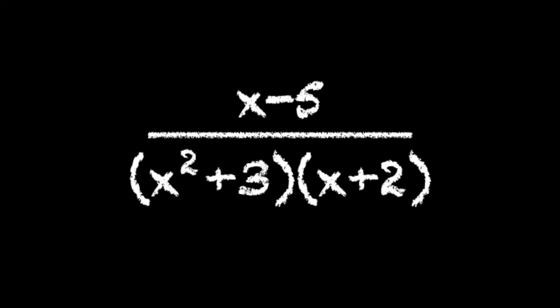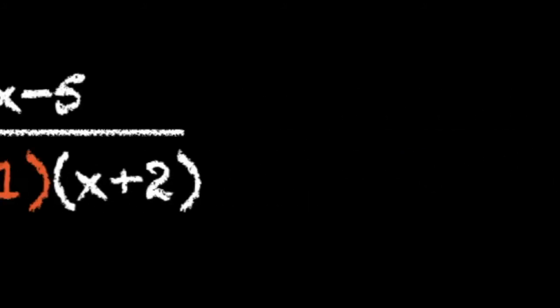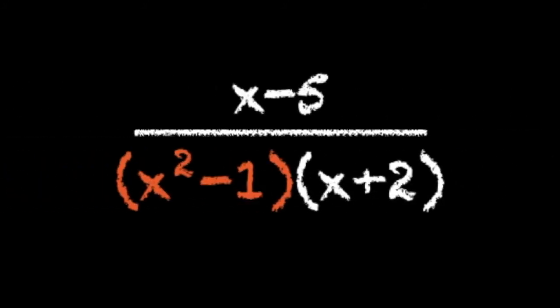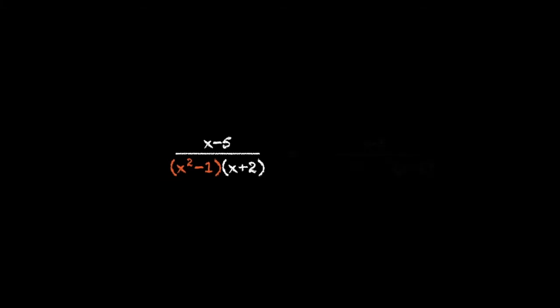An irreducible quadratic factor is simply a quadratic that you can't factorize. So for example, x squared plus three would be an irreducible quadratic factor, whereas x squared minus one would not be, because you could factorize it as x minus one times x plus one.